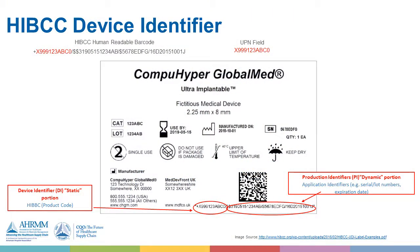Next we have an example of the HIBCC barcode, which is very similar to the information in the GS1 barcode example — we still have all of the human readable information and all of the machine readable information. The barcode here is a little different: it's a 2D data matrix code, which is really helpful for smaller products. Think about a pack of suture — about an inch and a half by three inches, which is not a very big area. You have a lot of information that has to fit in very small real estate. The data matrix code also helps with things like chest tubes, which are circular and can't be scanned in a circle. Manufacturers are using the data matrix code to solve those problems.